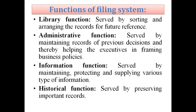Third is the information function, which is served by maintaining, protecting, and supplying various types of information. For example, the accounts department may require information about expenditures made by the production department, or the sales department may require past information related to sales orders from the last five years. This function can be served by a filing system. Fourth is the historical function, which is served by preserving important records, such as a memorandum of association.